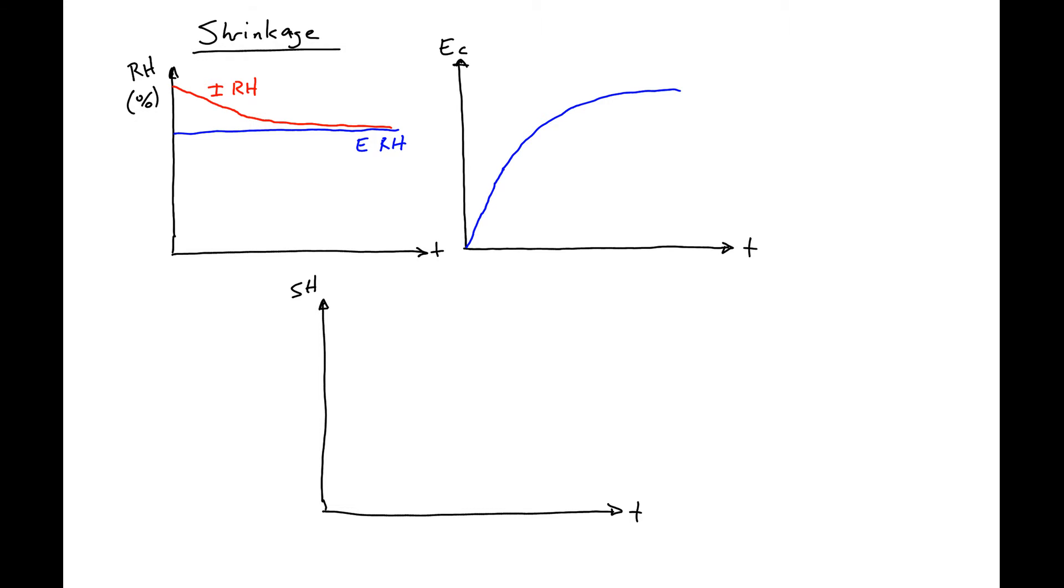And then finally we have the shrinkage. You can see that at the start we have the largest disparity between internal and external relative humidity. This means that the water is going to have the most desire right at the start to leave the pores. And this is at a time when our stiffness is relatively small.